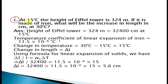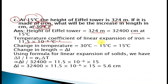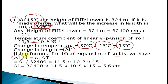Example C: At 15°C, the height of the Eiffel Tower is 32,400 cm. If it is made of iron, what will be the increase in length in cm at 30°C? The change in temperature is 30°C − 15°C = 15°C. Using the formula ΔL/L = α·ΔT and substituting all values including the temperature coefficient of linear expansion of iron, the change in length is equal to 5.6 cm.